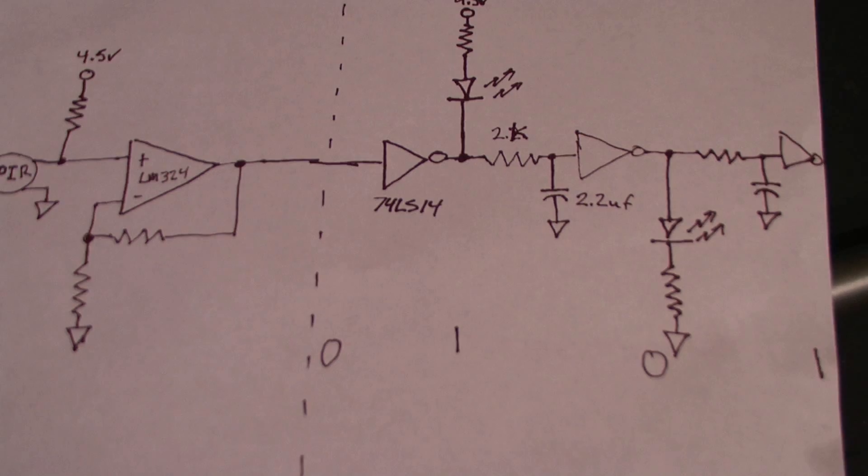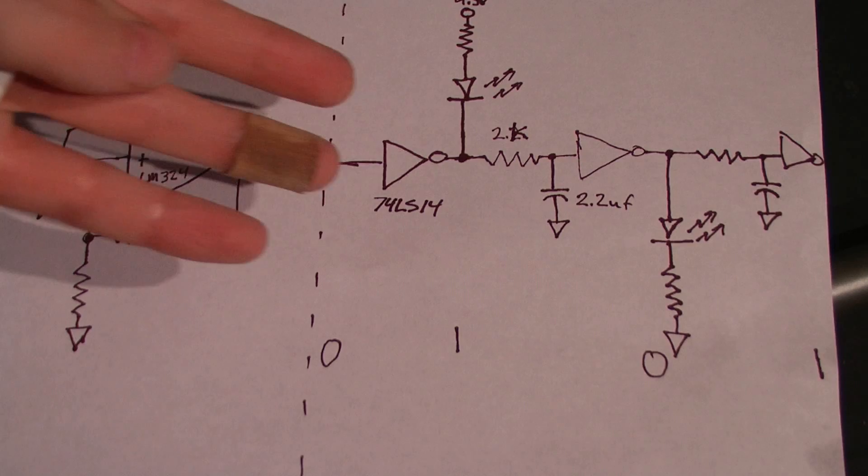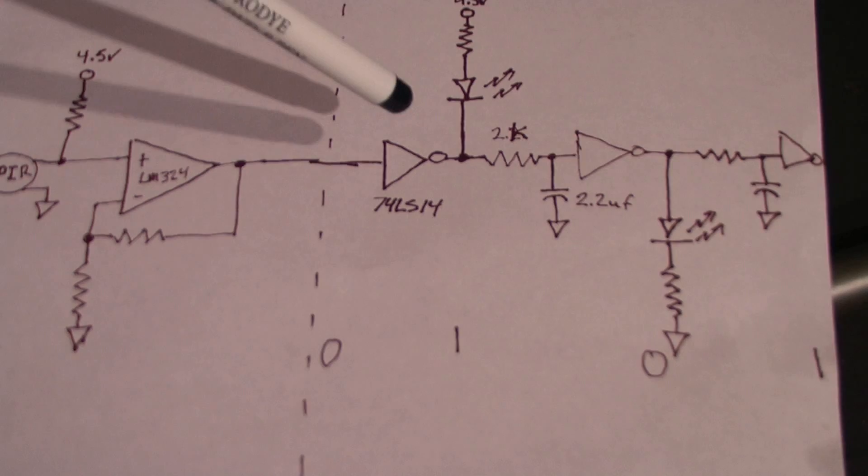Now, after the motion has stopped, and this has transitioned back to zero, this will propagate an off state through the chain.